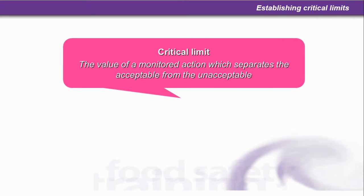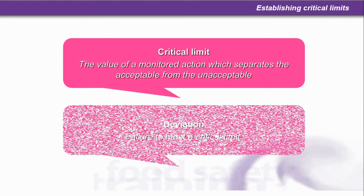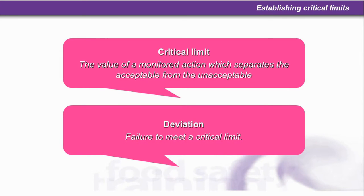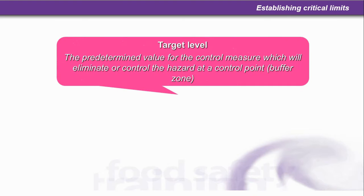So, establishing critical limits. First of all, let's have a look at some definitions. A critical limit is the value of a monitored action which separates the acceptable from the unacceptable. Deviation is failure to meet a critical limit. Target level is the predetermined value for the control measure which will eliminate or control the hazard at a control point or buffer zone — this is the level at which we want to aim for.